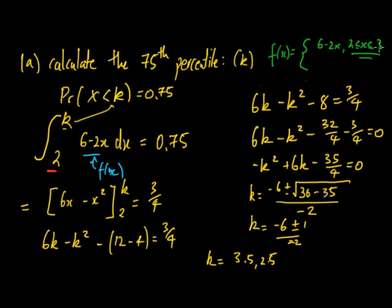so it's really important to always look at domain for these questions. So therefore it can't be 3.5, so therefore the 75th percentile is equal to 2.5.